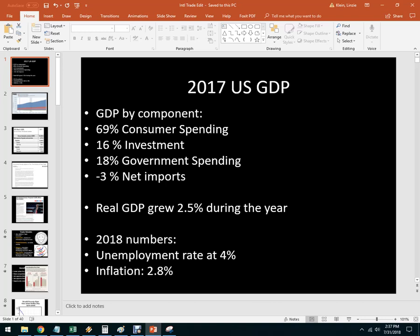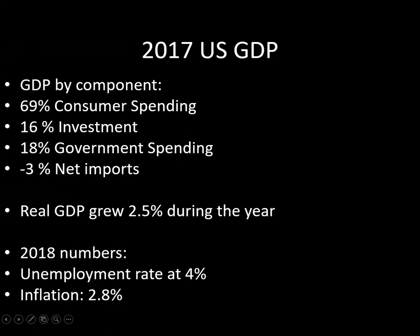In this clip we're going to do some trade accounting vocabulary and think about what a different country's relationship with the rest of the world actually means. Starting with the US economy in 2017, this is GDP by component. Almost 70% was consumer spending — that's the bulk of it. We have investment and government spending, and then net exports was negative 3%. The whole economy grew by 2.5%. When we think about trade, it's the smallest part of GDP.